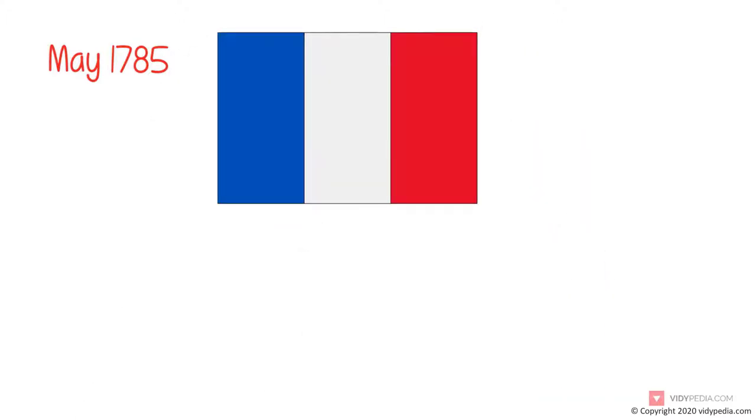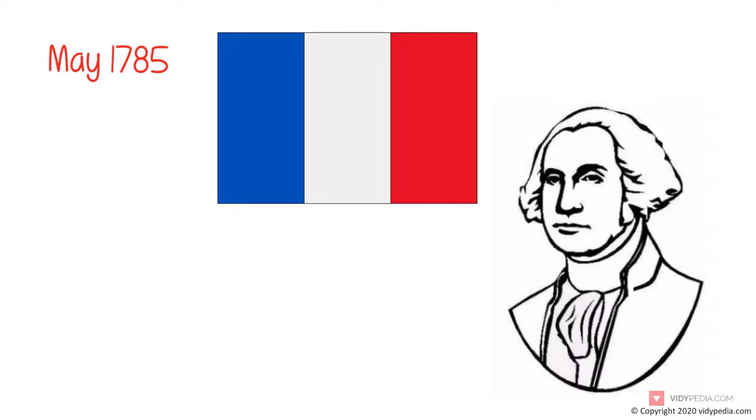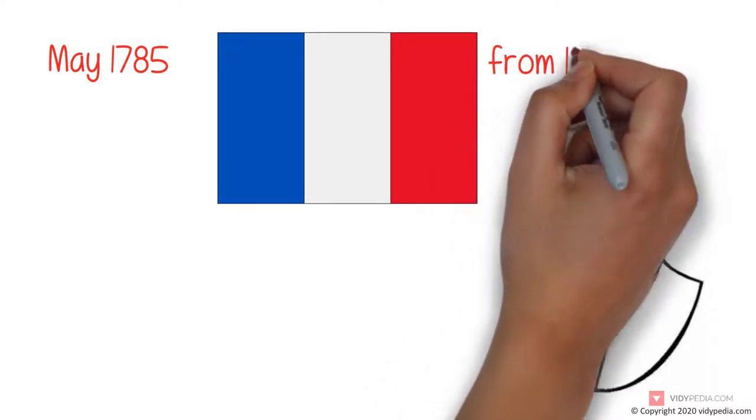In May 1785, Jefferson was appointed the United States Minister to France, and subsequently the nation's first Secretary of State under President George Washington from 1790 to 1793.